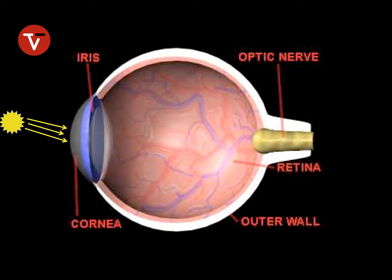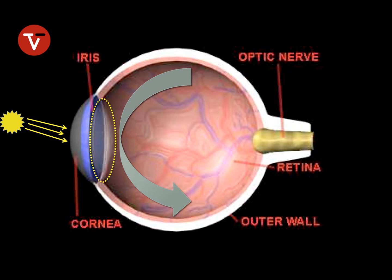As light enters the eye, it passes through that clear outer cornea, then travels through the front chamber of the eye, which is filled with a clear fluid called the aqueous humor. After passing through the anterior chamber, light passes through the pupil. The next structure it hits is the lens — a crystal clear structure that sits right behind the iris — whose function is to focus light rays through the back chamber of the eye onto the retina. This back chamber is filled with a gel called the vitreous.